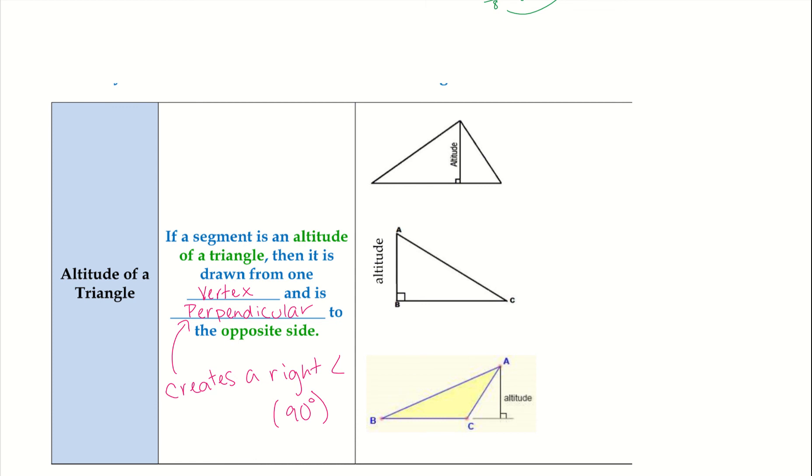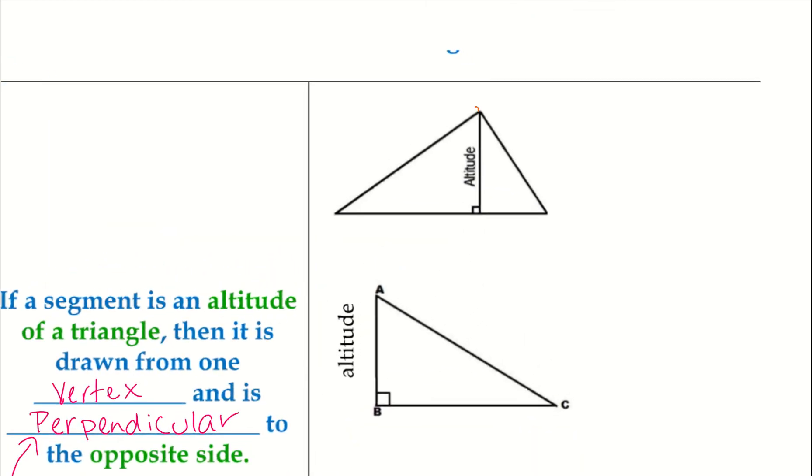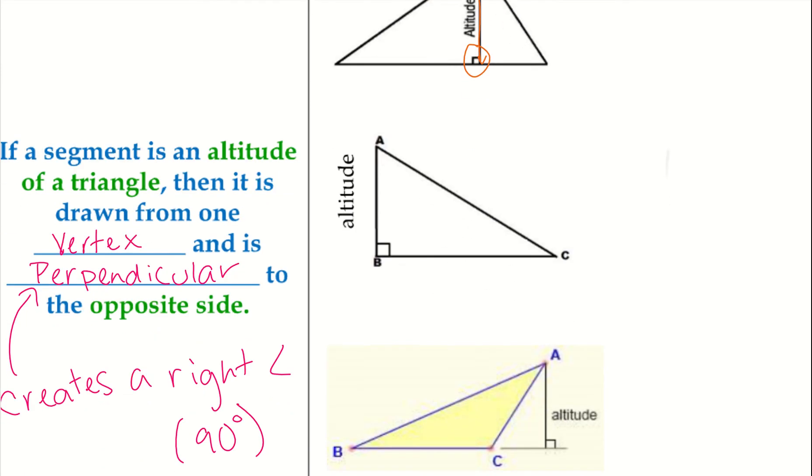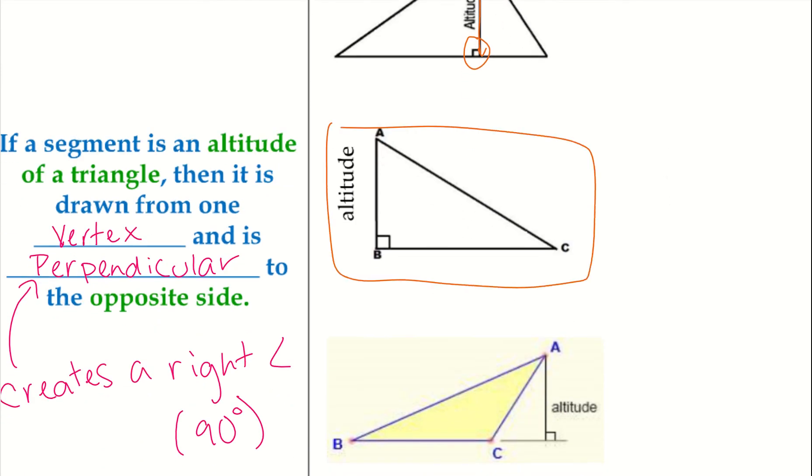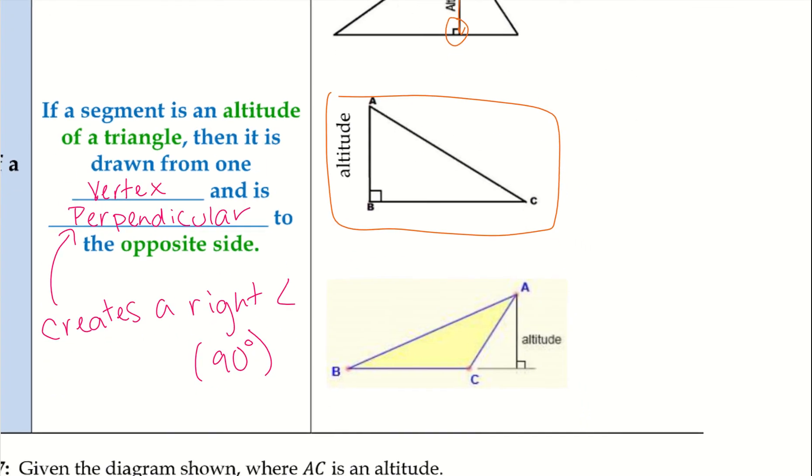We have this altitude, take a look at this top triangle here. We have this altitude that goes from the vertex, it goes all the way down until it creates that 90 degree angle, so it's perpendicular. Here we have just the altitude, we don't have that extra side that the top triangle has. And then our last triangle here, our altitude comes outside of the triangle. It's still an altitude because it creates that 90 degree angle.